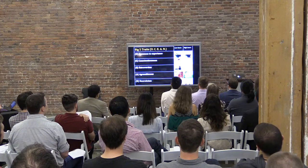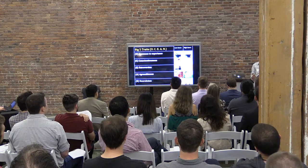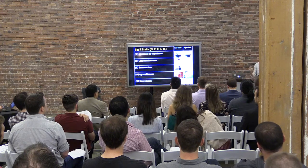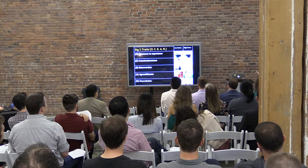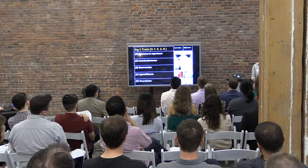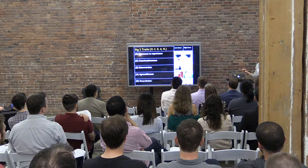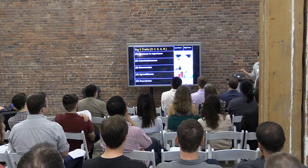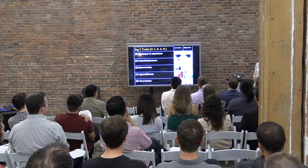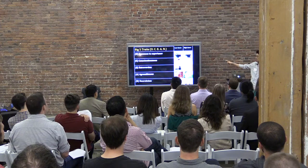The Big Five was derived through a technique called factor analysis, where they analyzed questions derived from common descriptive adjectives and derived five factors of personality. Here are the five factors — you can easily remember them through the acronym OCEAN, and you can score either low or high on each factor.